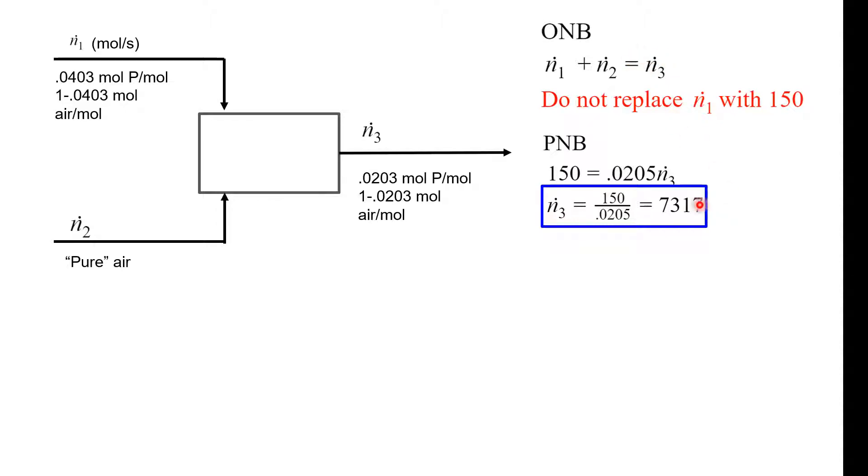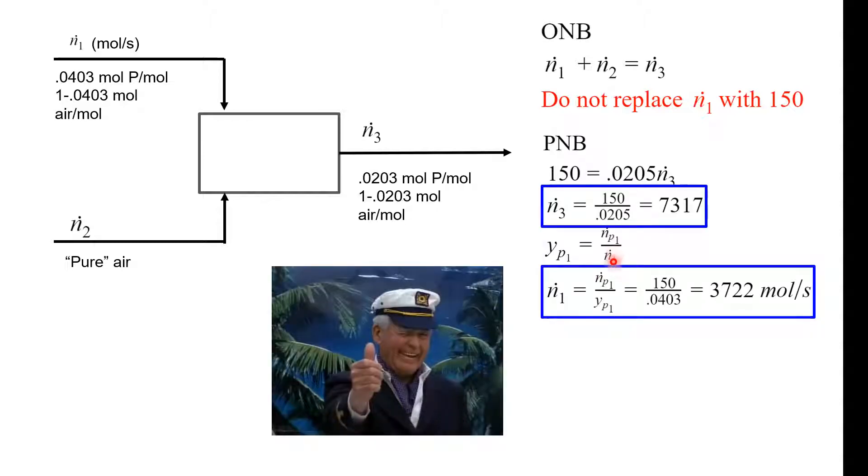I know I didn't put the units but this is going to be the moles per second of the output flow rates. From the definition of the mole fraction again, it's the molar flow rate of the component with respect to the molar flow rate of the feed, we can use that to solve for the molar flow rate of the first feed. Because we have the molar flow rate of the propane is 150 and we know from manipulating this expression we have this mole fraction of the propane. And great, so now we have n3 and n1.